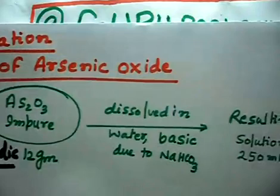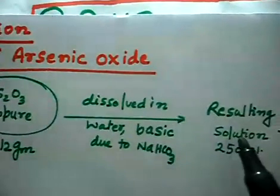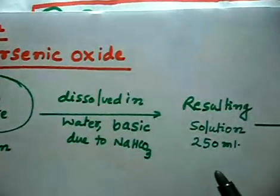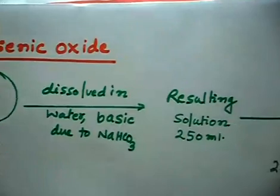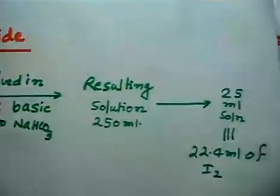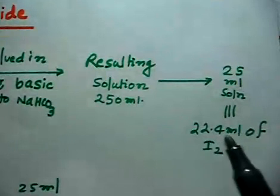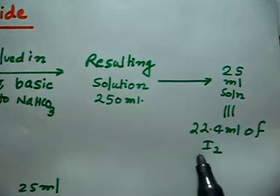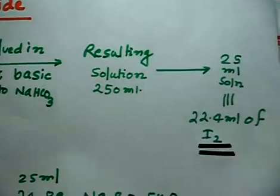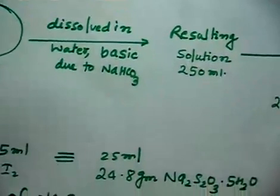The resulting solution is diluted up to 250 ml. 25 ml of this sample is completely oxidized by 22.4 ml of iodine (I2). To find the concentration of iodine — since concentration of iodine is not given — we use the next reaction.